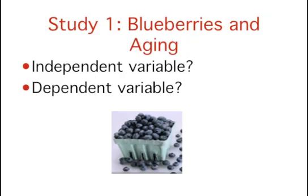Example 1: Can blueberries slow down aging? A study indicates that antioxidants found in blueberries may slow down the process of aging. In the study, 19-month-old rats, equivalent to 60-year-old humans, were fed either their standard diet or a diet supplemented by either blueberry, strawberry, or spinach powder. After eight weeks, the rats were given memory and motor tests. Although all supplemented rats showed improvement, those supplemented with blueberry powder showed the most notable improvement.